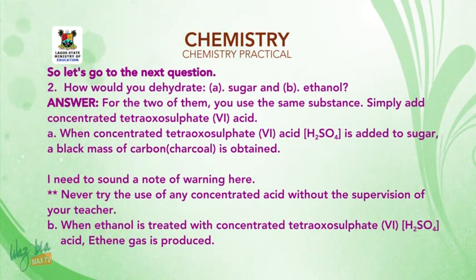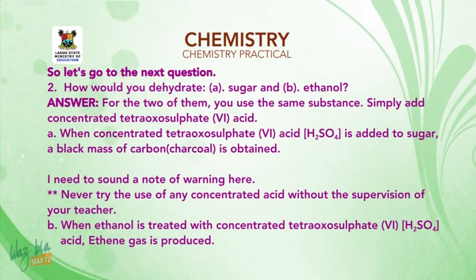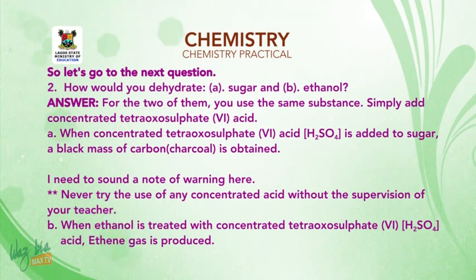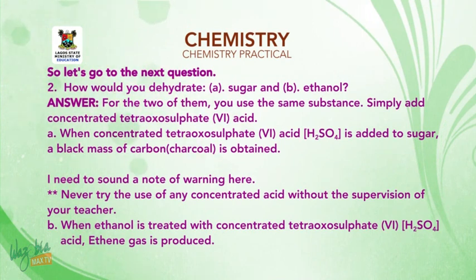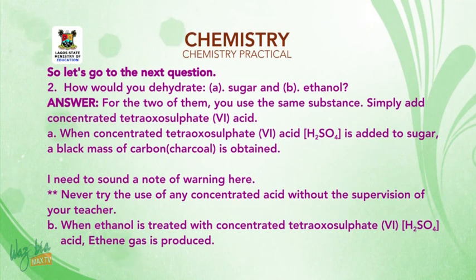The next question: how would you dehydrate sugar and ethanol? For both of them you use the same substance — you simply add concentrated tetraoxosulfate(VI) acid (H₂SO₄). When concentrated H₂SO₄ is added to sugar, a black mass of carbon (charcoal) is obtained. Note: never try using any concentrated acid without the supervision of your teacher. When ethanol is treated with concentrated H₂SO₄, ethene gas is produced.